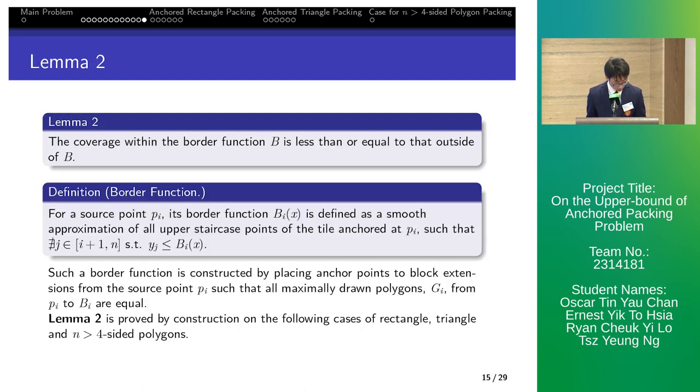Lemma 2 states the coverage within a border function b is less than or equal to that outside of b. First, we have to define what is a border function. Border function bi for a source point is a smooth approximation of upper right vertices of the tile at pi. Border function is constructed by putting anchor points to block the extensions from pi such that all maximally drawn polygons from source point to bi are equal. Hence, we know bi can always degenerate to the general case. We will prove that on a case-wise basis throughout this paper.